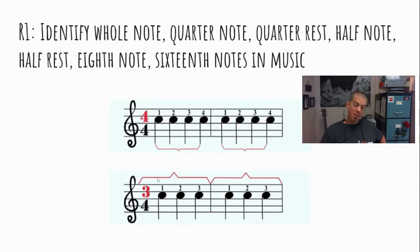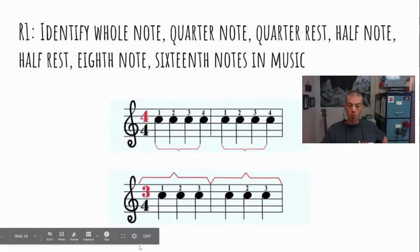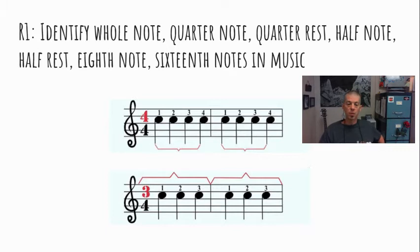Some music, if it's not written in four-four, it's probably written in three-four. Now there's a lot of different time signatures, but most of the music you'll ever listen to is either four-four or three-four. In that case, you would count one, two, three, one, two, three. That'd be your steady beat, considering that these are all quarter notes that get one whole beat.